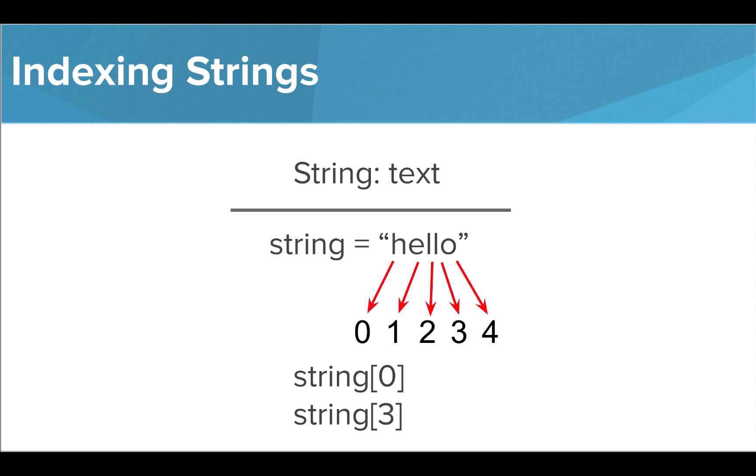Now, if we wanted to get a specific letter of our string, we write the variable name and use square brackets to denote which index value we want. So if I write string zero, the letter I would be finding is H. If I write string three, the letter I would find is the second L.